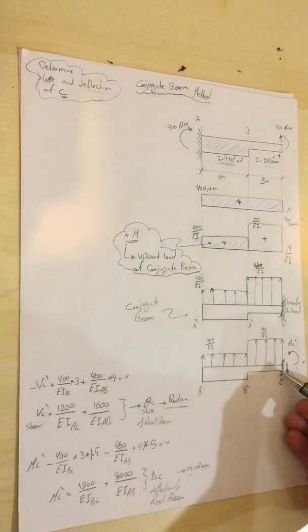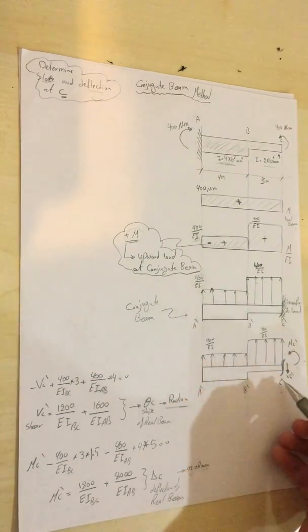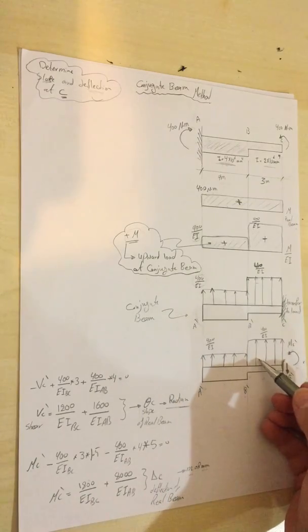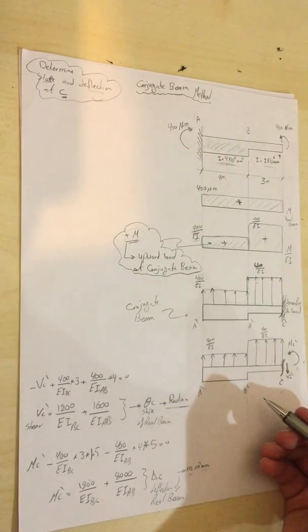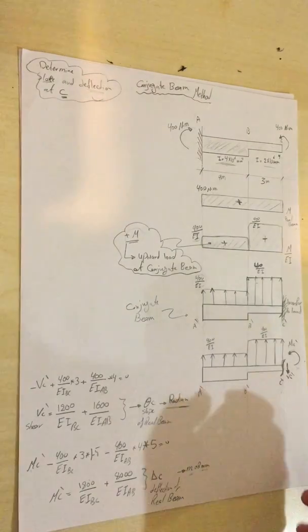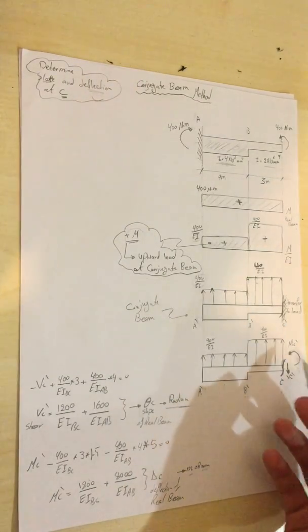For the moment, it should be upward. I will assume upward will be compression and downward will be tension. I will calculate this shear and moment for the conjugate beam.